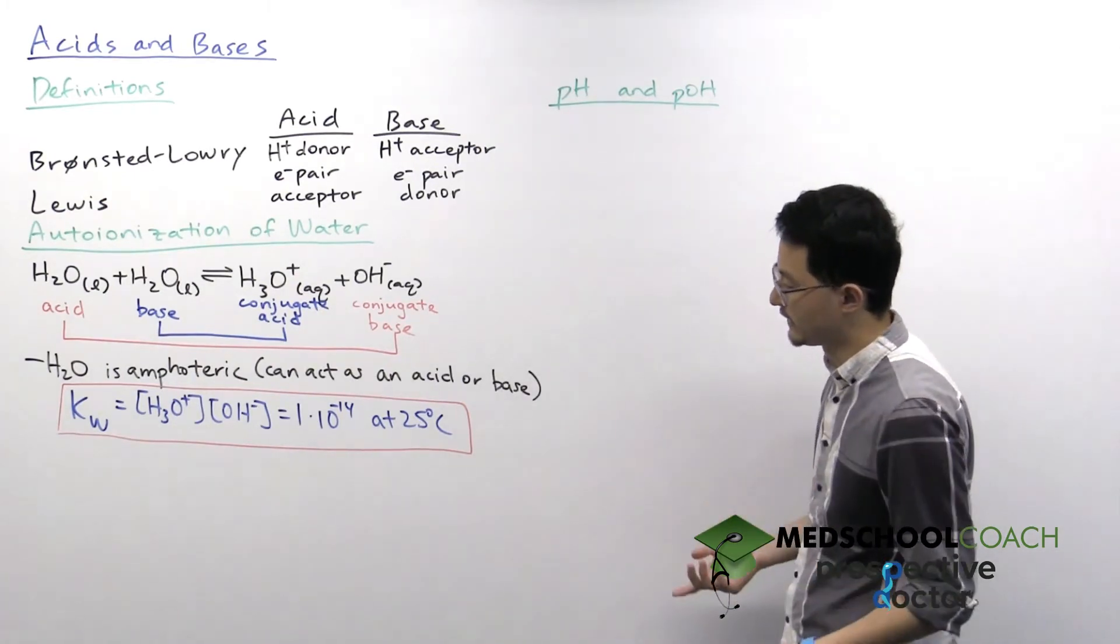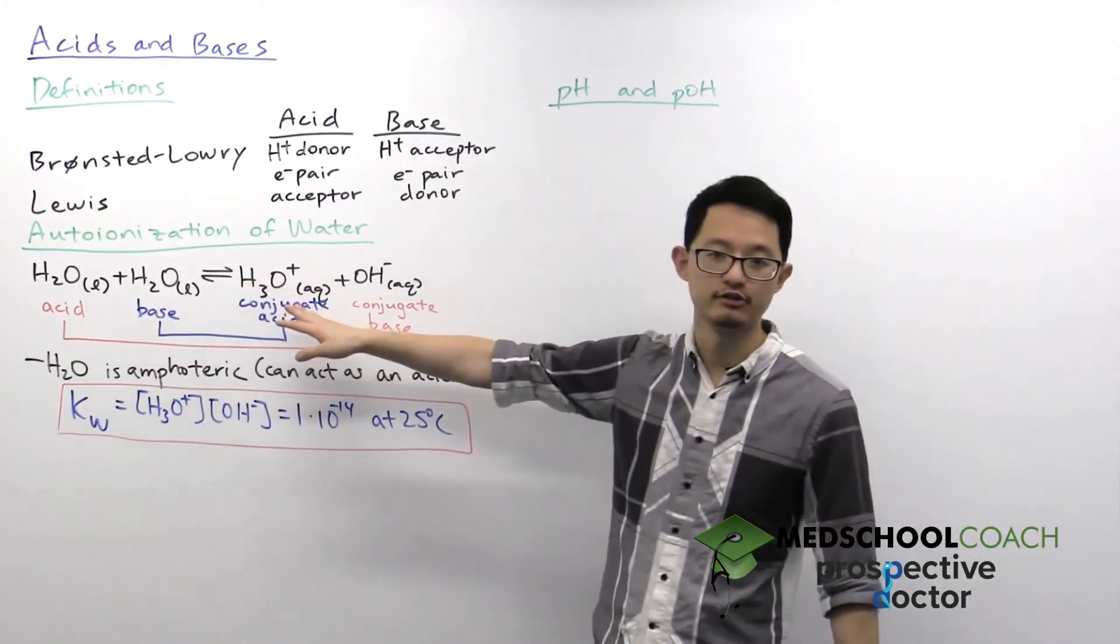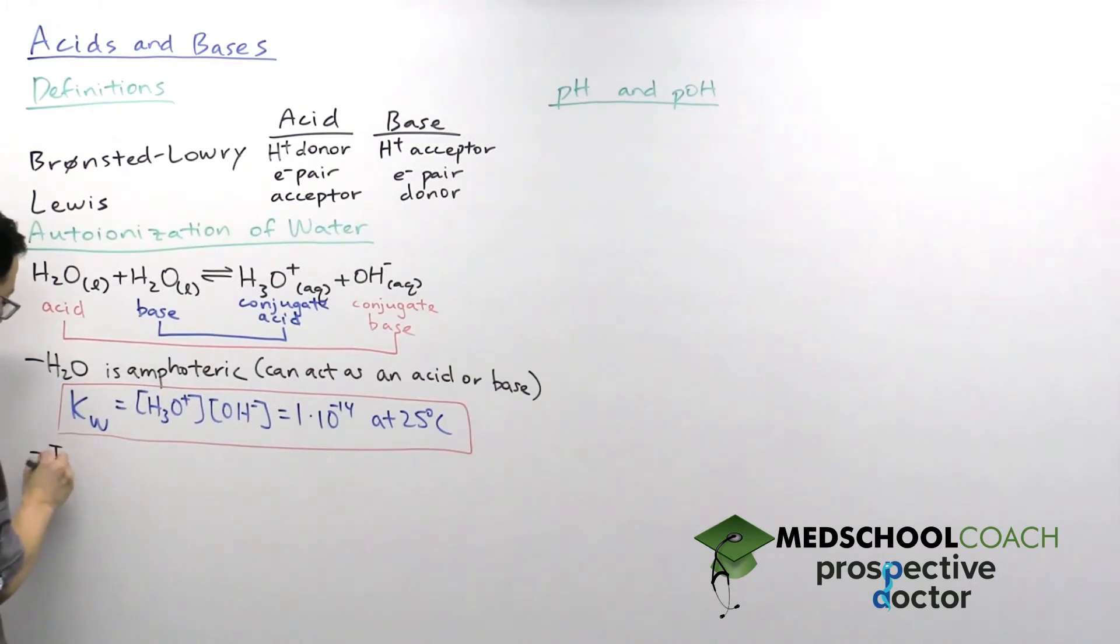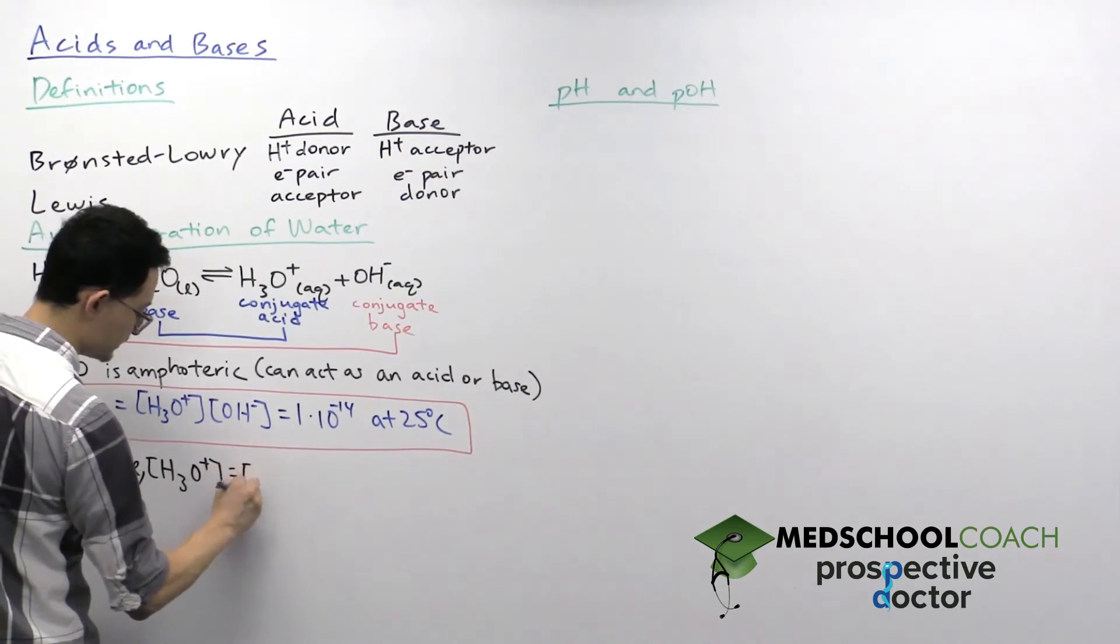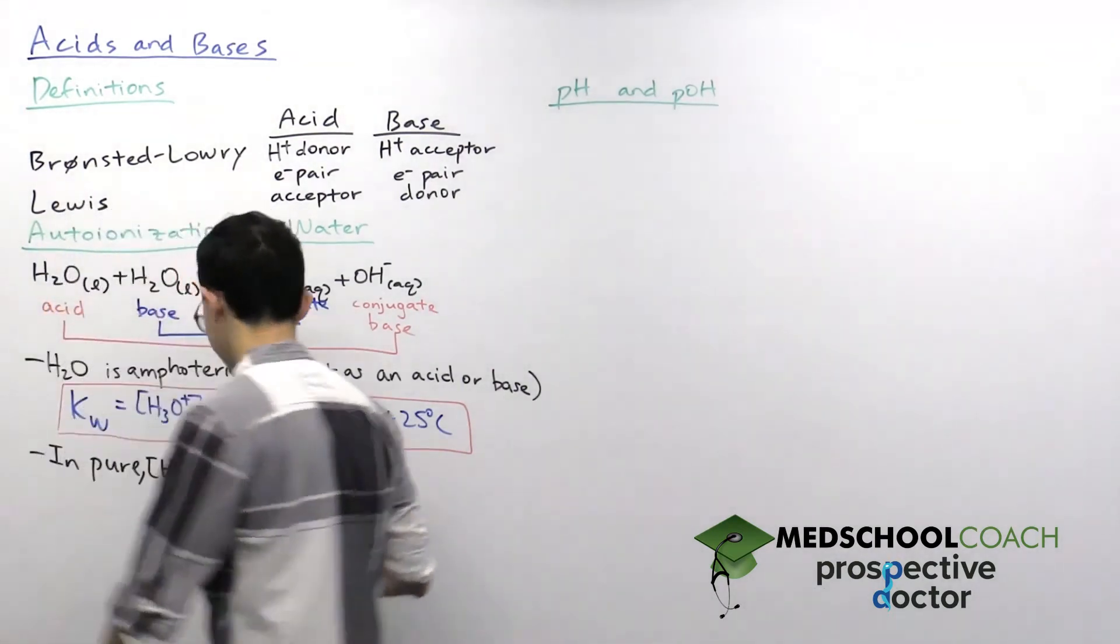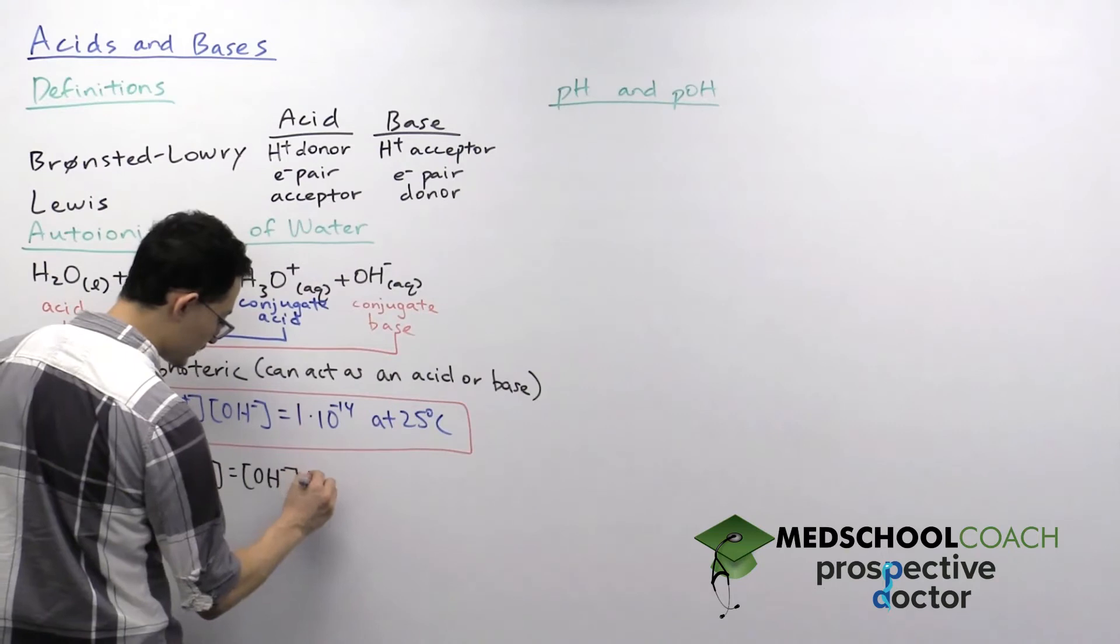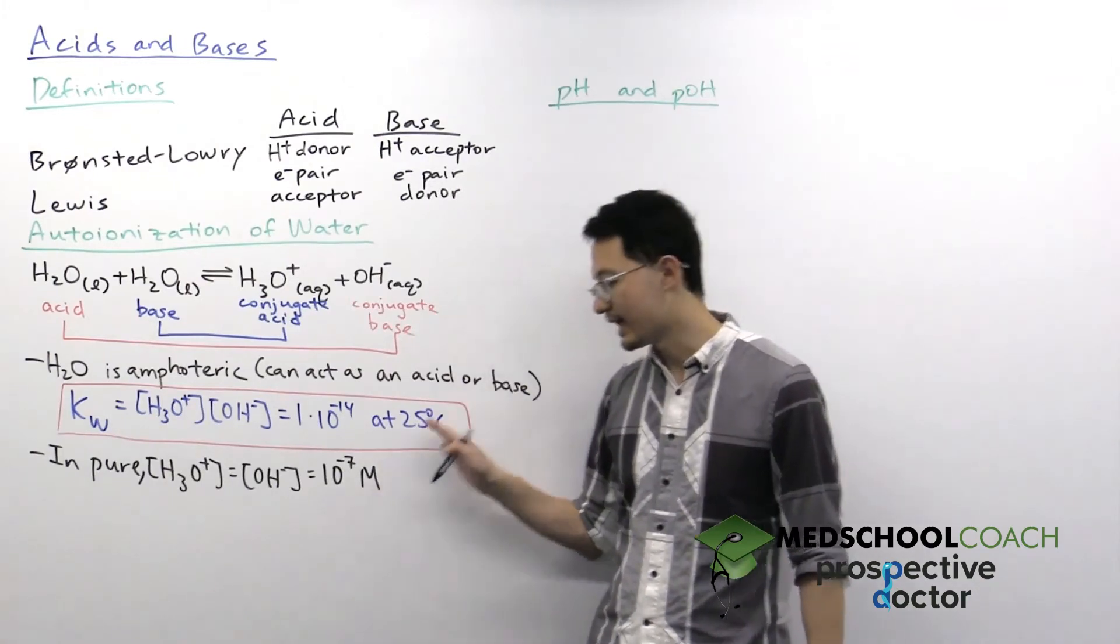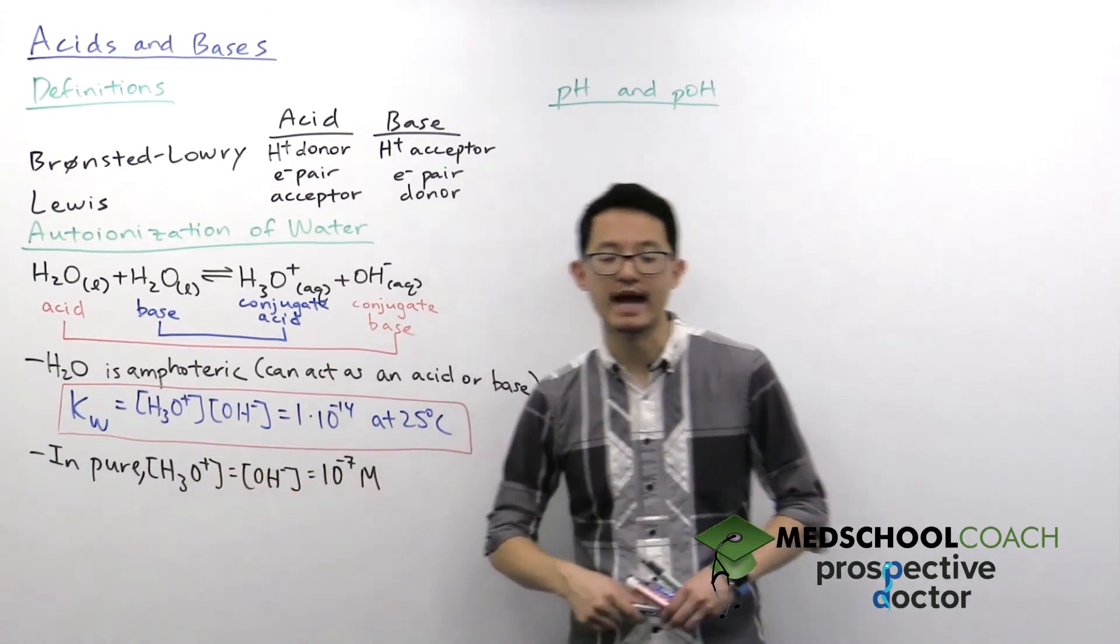Now, another thing that's very interesting is if you look at this auto-ionization equation, you can see that every time you form a hydronium ion, you also have a hydroxide ion. So what that tells us is if we're dealing with pure water, the concentration of the hydronium ion is equal to the concentration of the hydroxide ion. And if these two concentrations are equal and they have to multiply to equal 10 to the negative 14, that means in pure water, the concentration of the hydronium ion and hydroxide ion is 10 to the negative 7 molar at 25 degrees Celsius. So now we do know how much of each ion we have in solution.